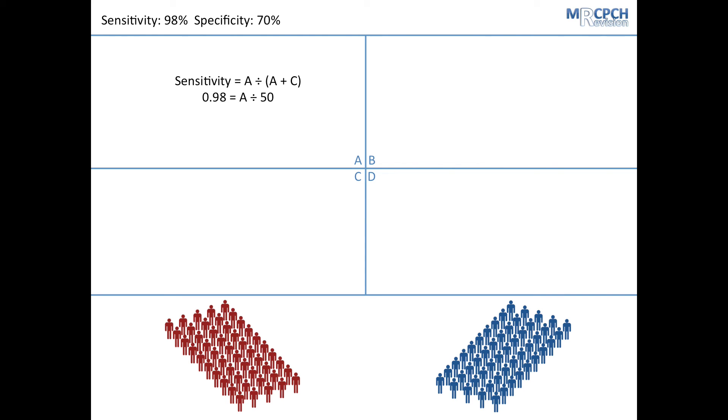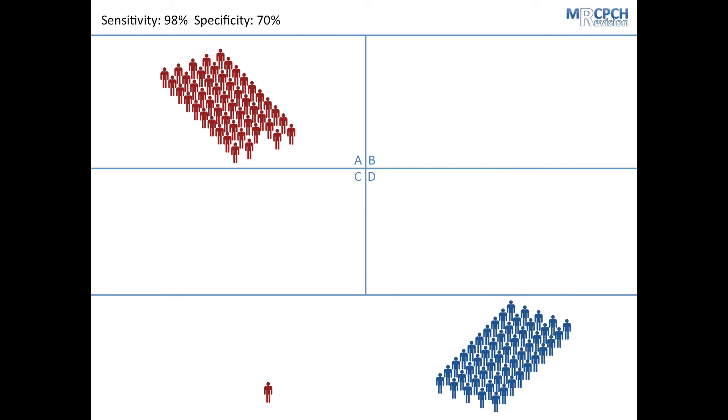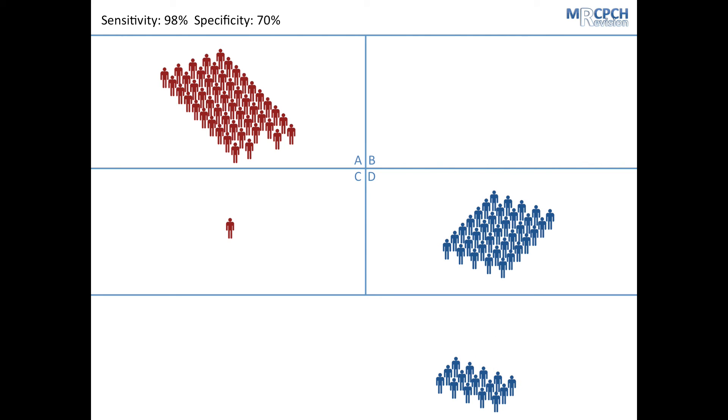From the sensitivity, we can work out that A is 49, leaving 1 to populate box C. From the specificity, we can work out that D is 35, leaving behind 15 to populate box B.